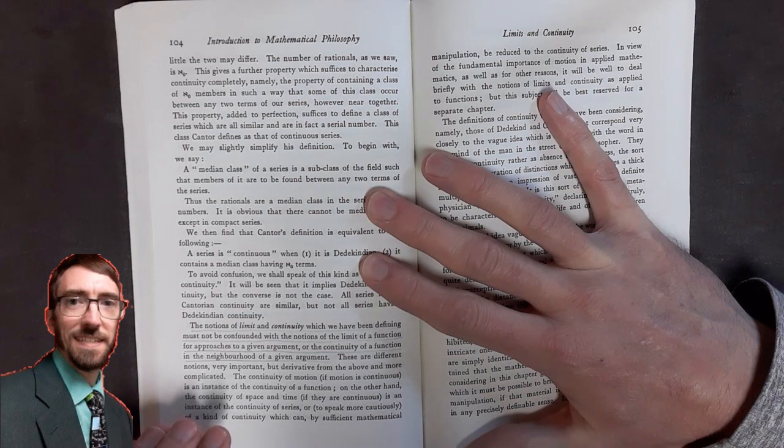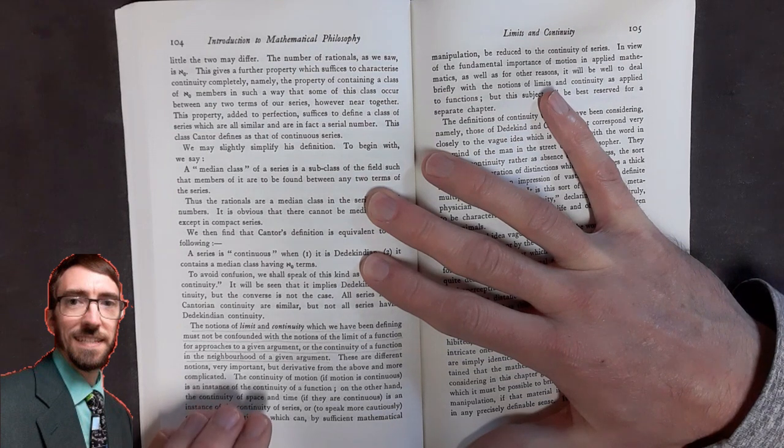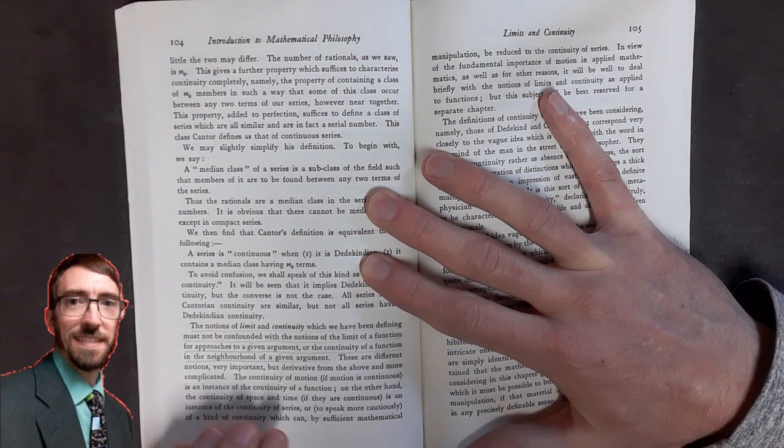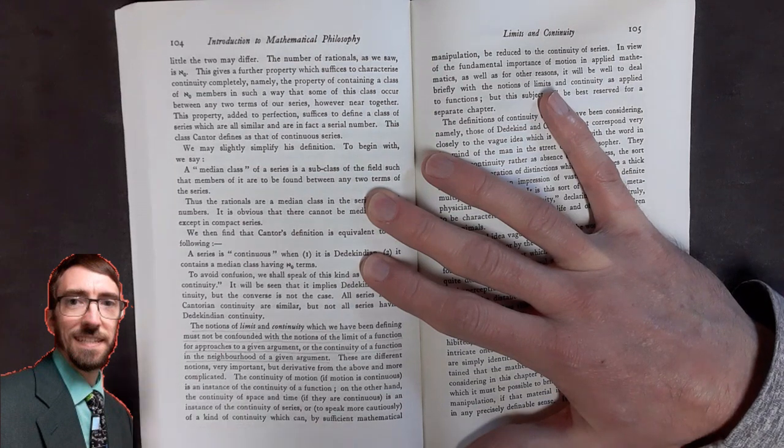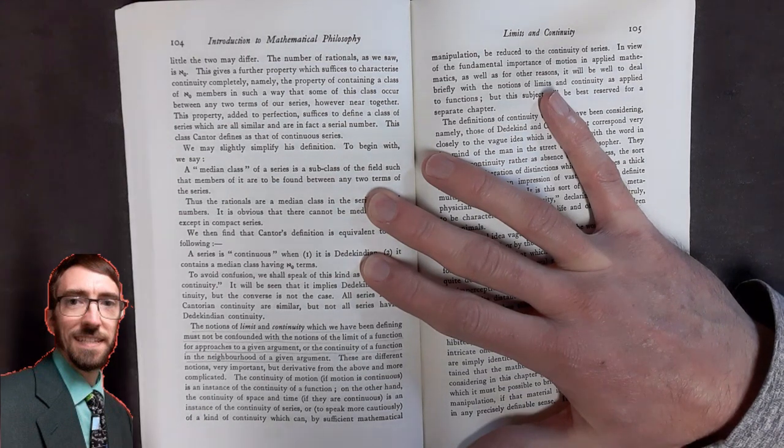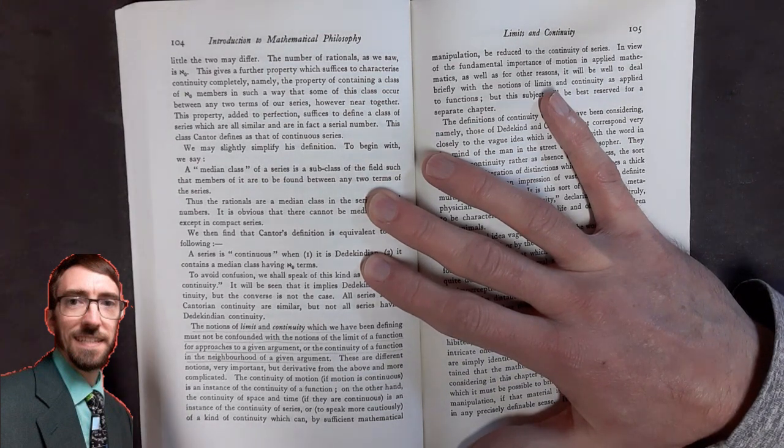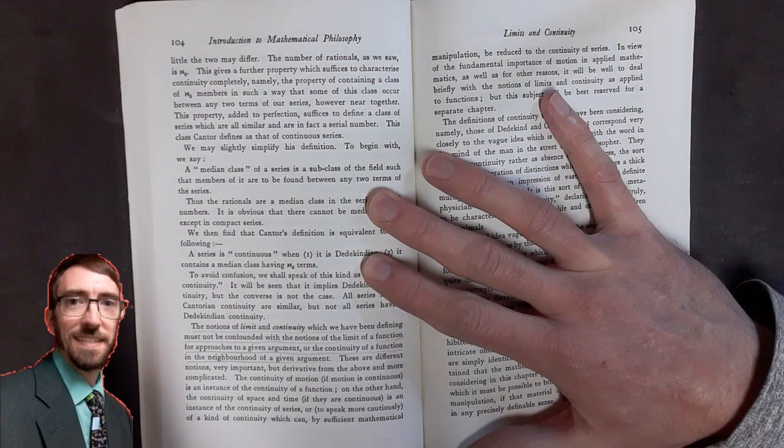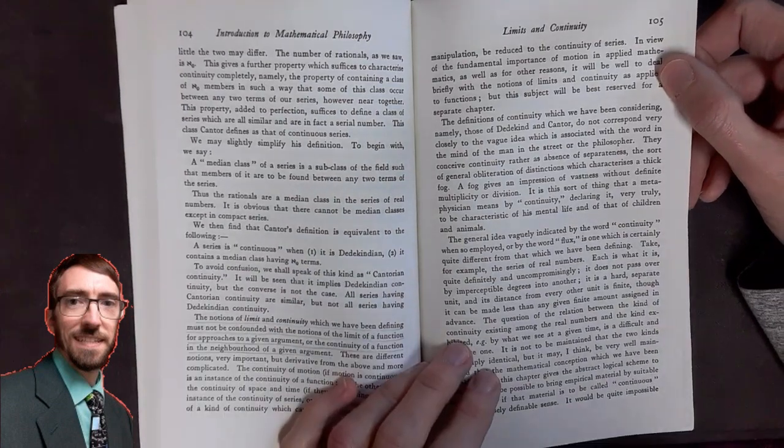was the notions of limit and continuity, which we have been defining, must not be confounded with the notions of the limit of a function for approaches to a given argument, or the continuity of a function in the neighborhood of a given argument. So he's saying that when he's talking about limit and continuity in general, it's not the same as the idea of a limit of a function, or continuity of a function that we might think of as we think of calculus and analysis.